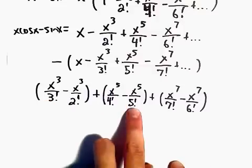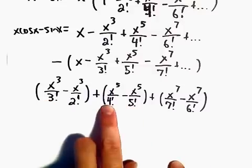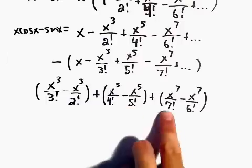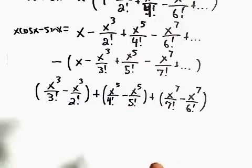And then we would be left with the larger one, and it kind of switches: 5 factorial, 4 factorial, and then back to the 7 factorial over 6 factorial.